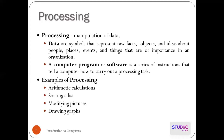A computer program is a series of instructions that tell the computer how to carry out a processing task. Software is a series of instructions — it tells us what we are doing and how we are doing it, and the computer will follow and perform those instructions. Processing means arithmetic calculations, sorting lists, modifying pictures, and drawing graphs. These are all processes.